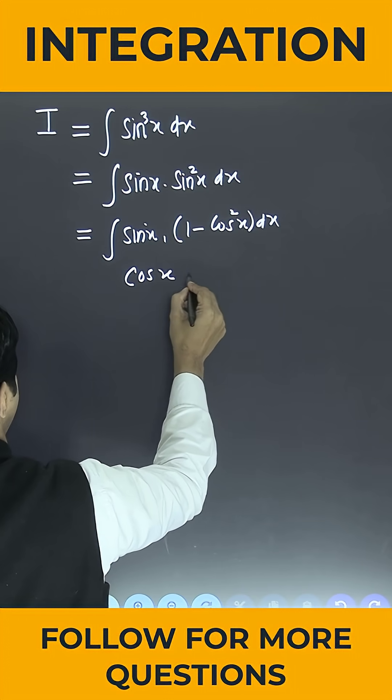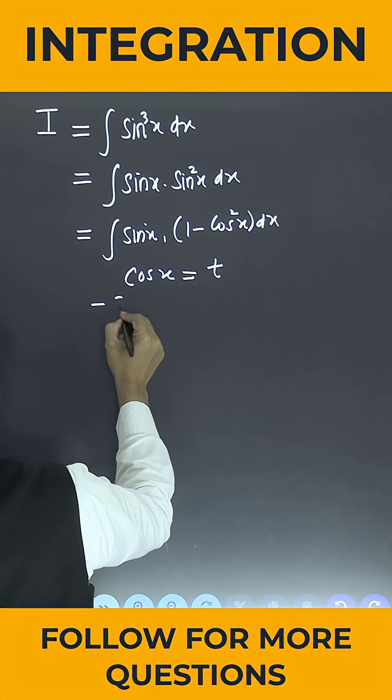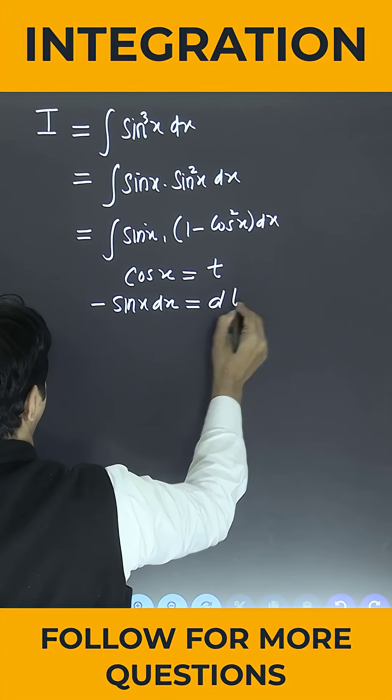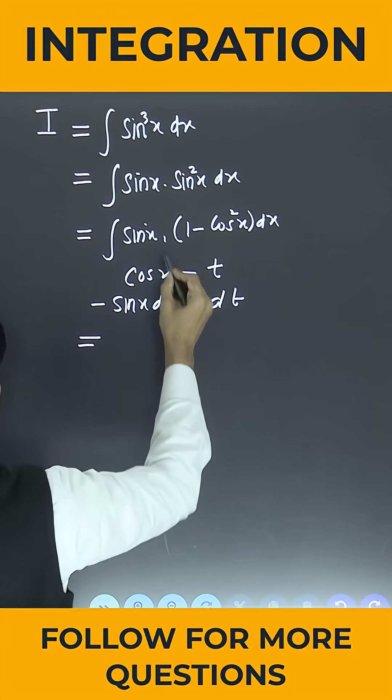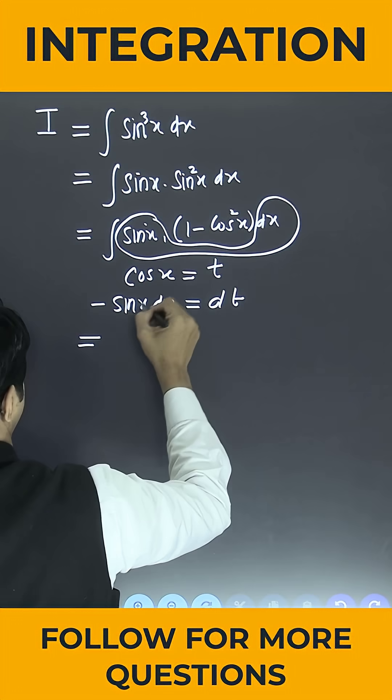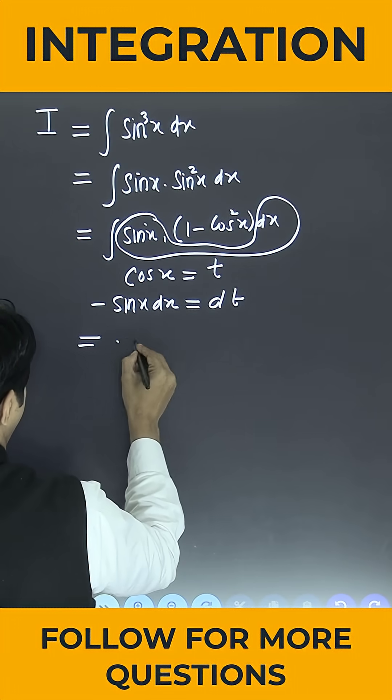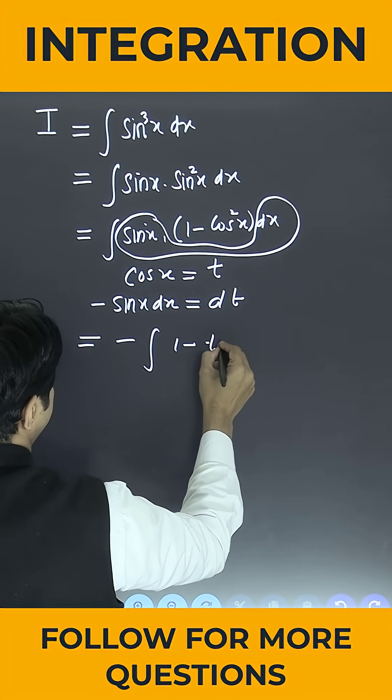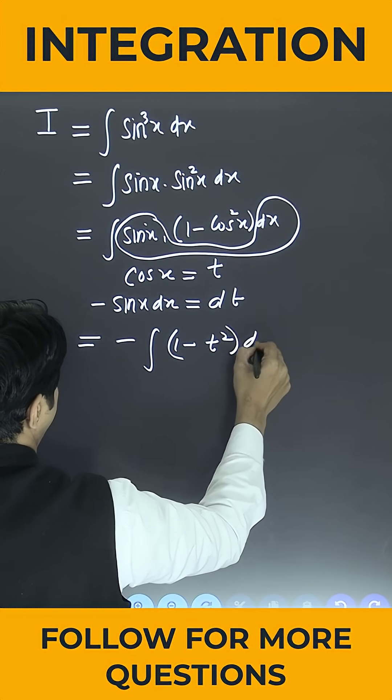Simply put cos x is equal to t, so that minus sin x into dx is equal to dt. So now can I replace this sin x into dx? Sin x into dx is nothing but minus dt. So minus sign is outside. So 1 minus t square into dt.